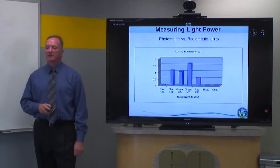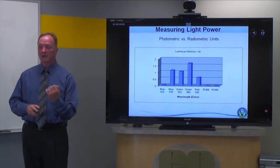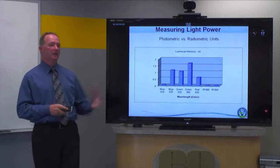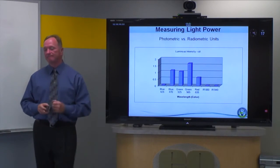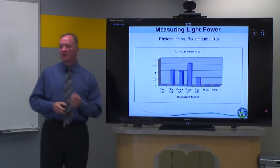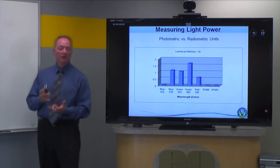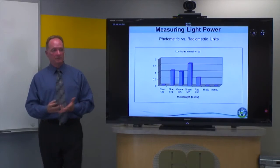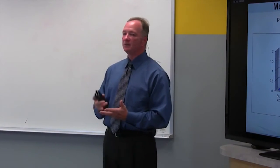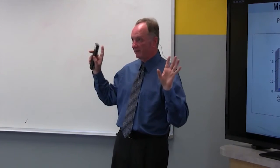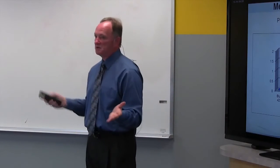Here's an example. I went to an LED manufacturer's website and grabbed some information, plotting luminous intensity — the standard SI measure — in candelas for several LEDs: two blues at different wavelengths, two greens, two IRs, and a red. If I wanted the most intense light, the obvious choice based on luminous intensity would be the green at 565 nanometers — it appears brightest. But when we look at the same LEDs expressed as radiometric units, there's a big difference.